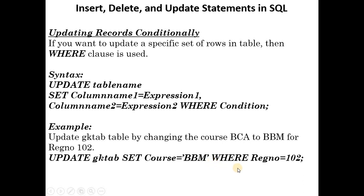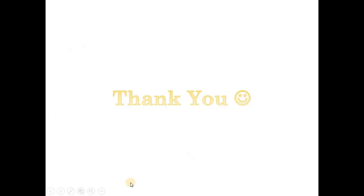It will go to the row having register_number 102, and within that row only the course column will be changed to BBM — all other rows remain intact. Thank you.